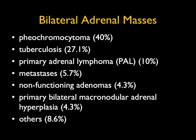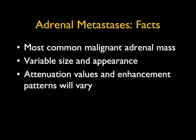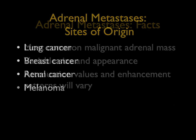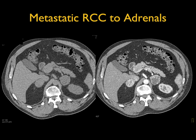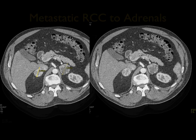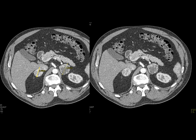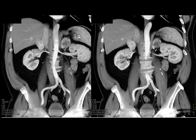When thinking about bilateral adrenal masses, metastasis is the classic — the most common malignant adrenal tumor, with variable size and appearance and attenuation values often depending on the primary tumor. The most common sites of mets are lung, breast, kidney, and melanoma. Here's an example: bilateral adrenal masses on non-contrast and contrast imaging that both enhance. The patient was missing the right kidney and had known clear cell renal cell carcinoma — this is bilateral adrenal metastasis.